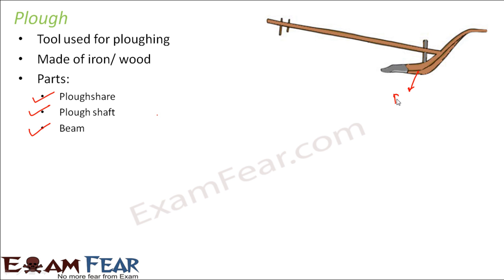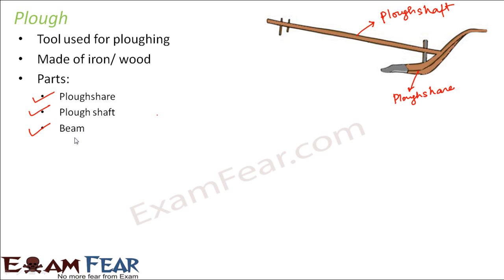The plowshaft is the long log, generally made of wood but sometimes iron. The beam is the part placed on the animal's neck, because the plow is carried by a pair of animals. Two animals carry it on their neck and then pull the plow through the field. The man holds the handle and operates it from behind.